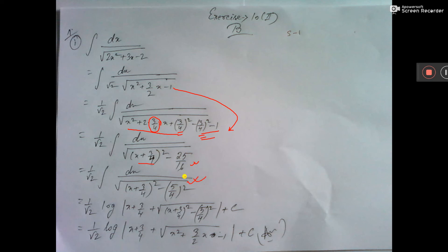Now using the formula, the integral of dx over root of x squared minus a squared, the formula is log mod of x plus square root of x squared minus a squared plus c.